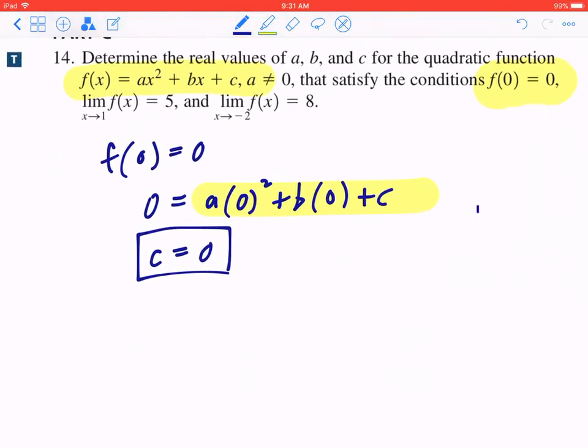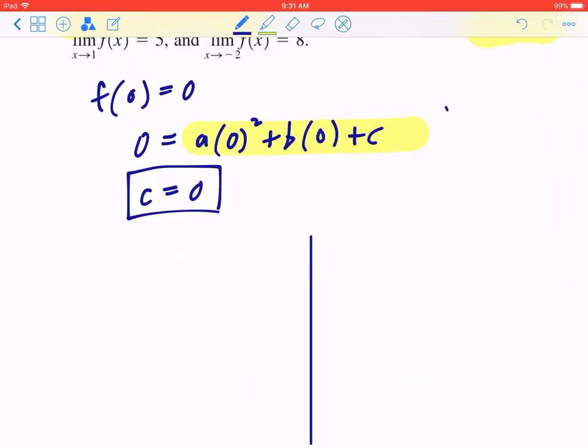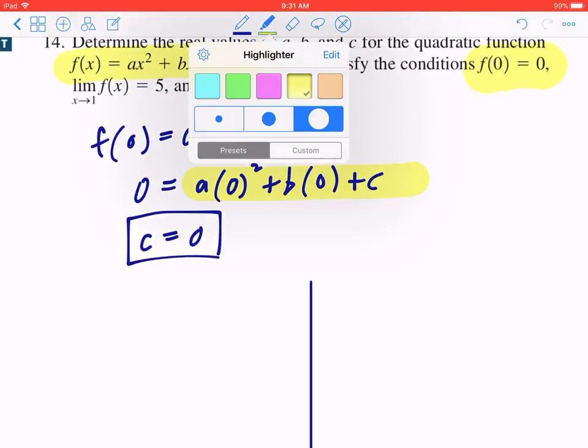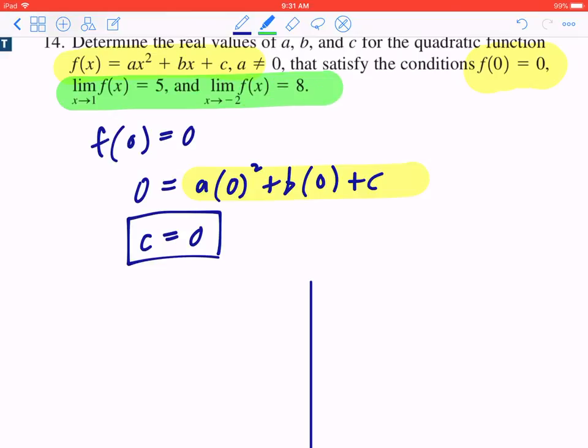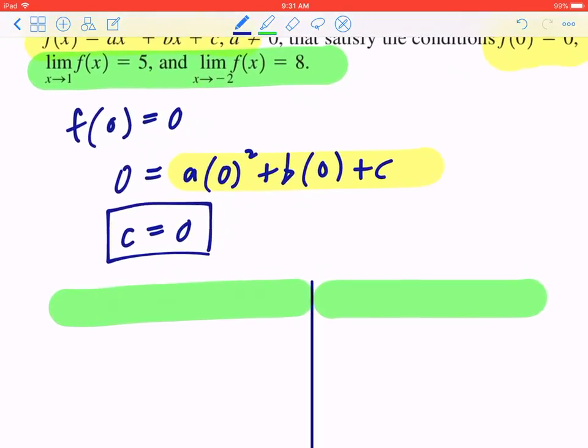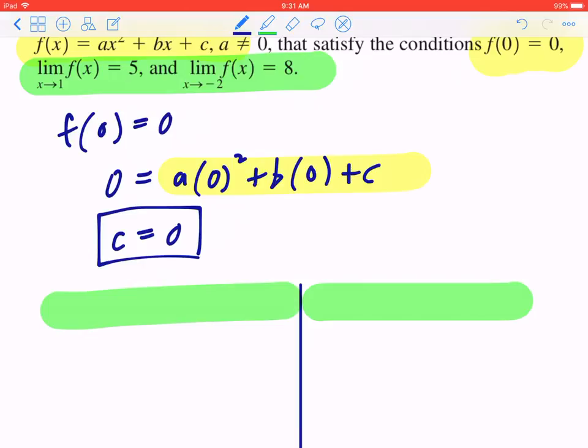Step two, I'm going to draw a line in the middle, divide this into two different columns. They also gave you the fact that the limit of f of x equals different numbers depending on the x values.